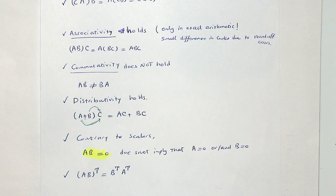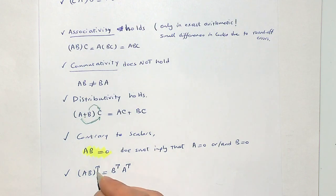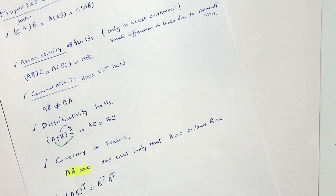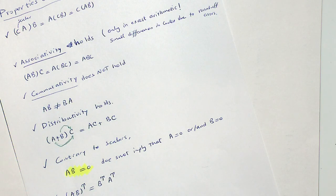Regarding associativity, the order of grouping doesn't matter — you could compute C, A, B in various groupings and get the same result. We also have the transpose property: (A·B)^T = B^T · A^T. Note the order reverses. We will use this property later in this course and next semester.